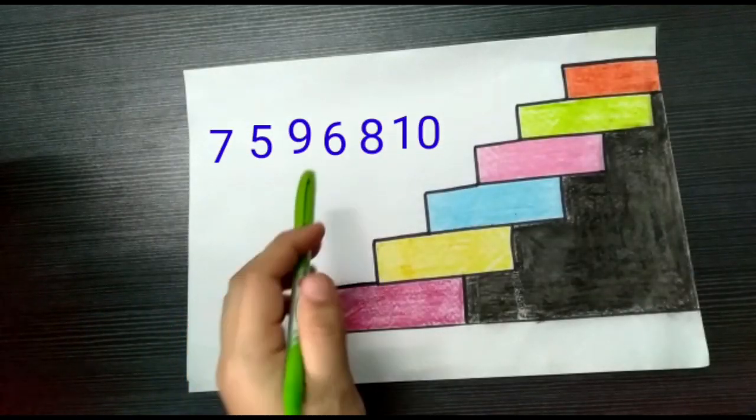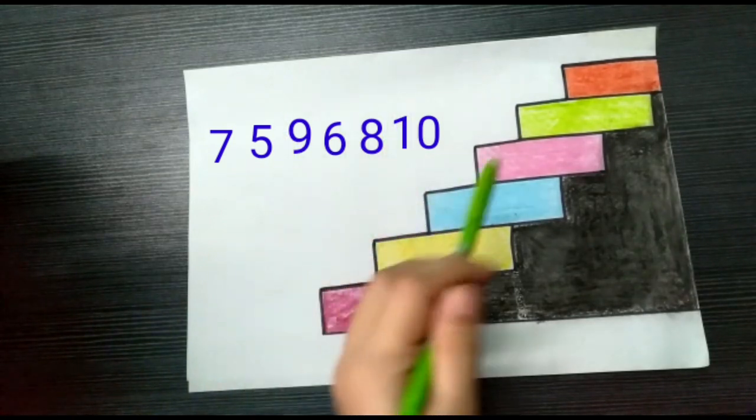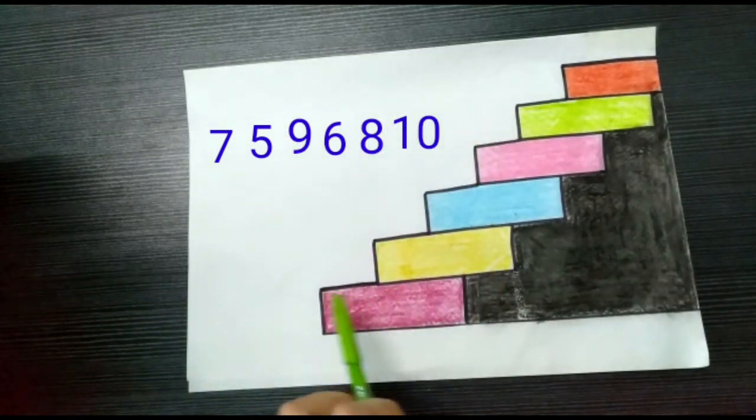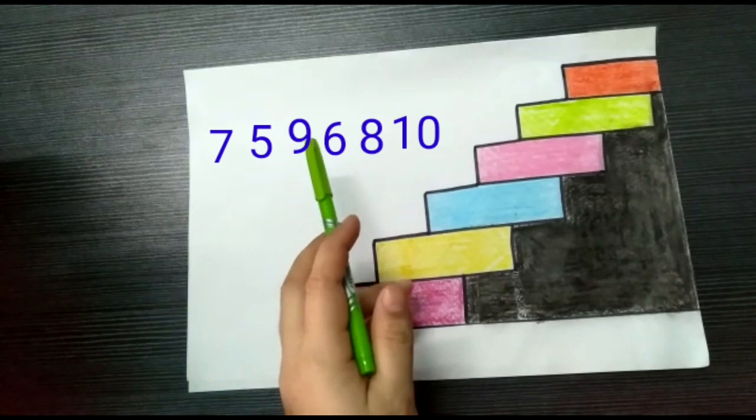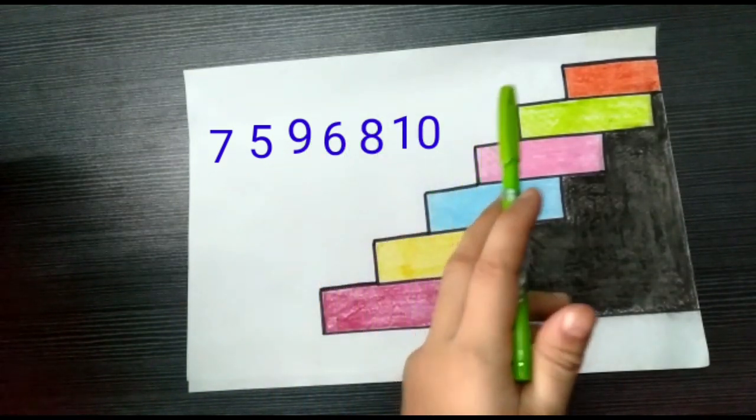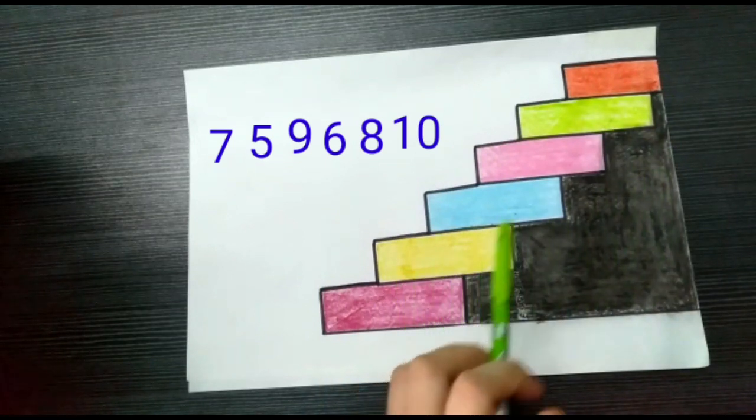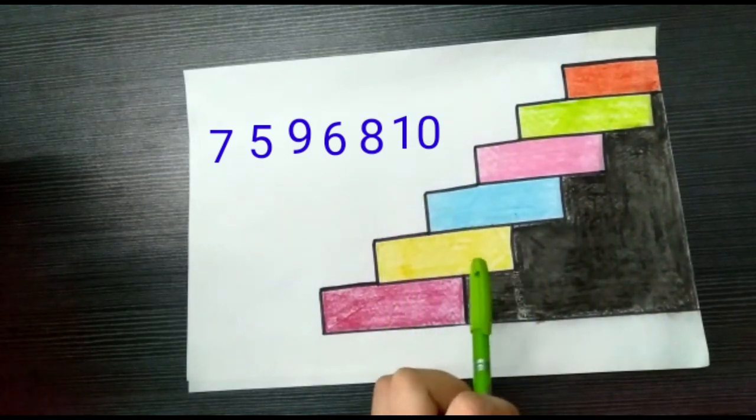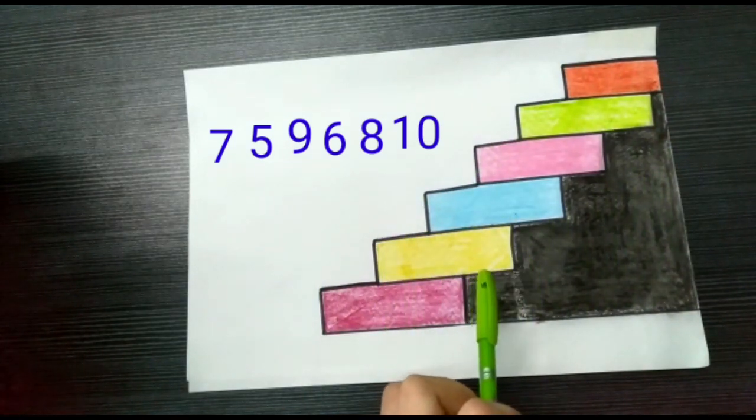Now, children, here are another 6 numbers which are jumbled up: 7, 5, 9, 6, 8, and 10. Can you put them in ascending order again by labeling the steps correctly?